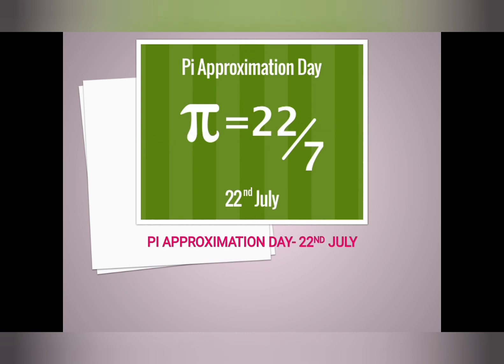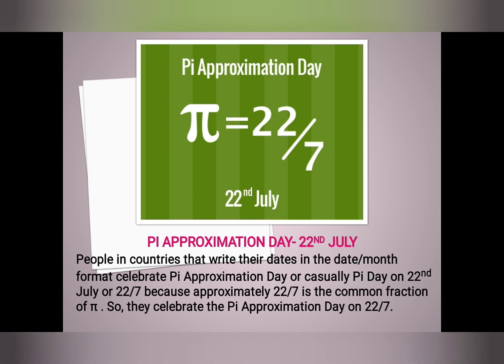Pi Approximation Day is celebrated on 22nd July. People in countries that write their dates in the date/month format celebrate pi approximation day, or casually pi day, on 22nd July, because approximately 22/7 is the common fraction of pi. The approximation term is used because 22/7 is supposed as the value of pi, so it is called pi approximation day or casually pi day.